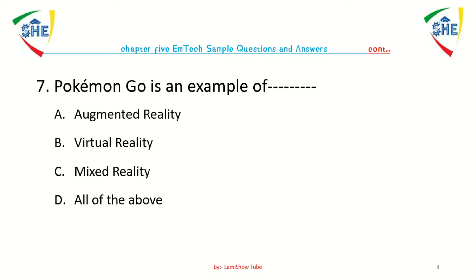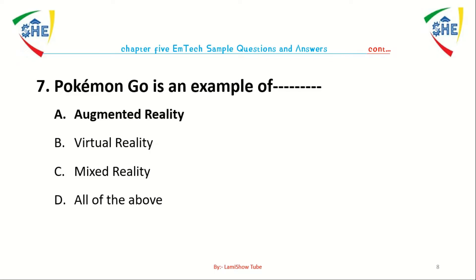Question number 7: Pokemon Go is an example of dash. A) Augmented reality, B) Virtual reality, C) Mixed reality, D) All of the above.